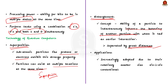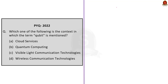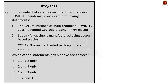Quantum computers are increasingly adopted due to their relatively smaller size compared to conventional computers. They do not rely on transistors like traditional machines and consume comparatively less power. In this question, they are asking which context the term qubit is mentioned. The answer is option B, quantum computing.